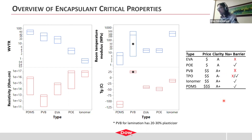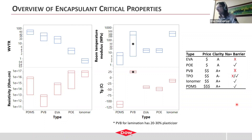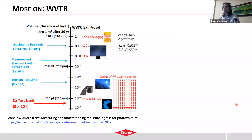Regarding price, TPO requires some additional chemistry; PVB and ionomer have multiple steps of chemistry relative to EVA and POE, so they generally have a cost adder. PDMS has an entirely different supply chain — it's a silicon-based material rather than a hydrocarbon — so it has additional energy costs. The clarity of all of these is pretty good — most are ballpark 90%+ transmittance. PVB, ionomer, and PDMS are the most capable of the highest transmittance. In cases where sodium transport matters, such as PID-S or PID shunting, EVA and PVB are known to be not as good as sodium barriers.